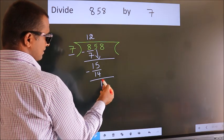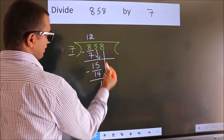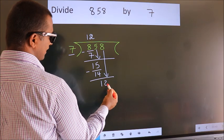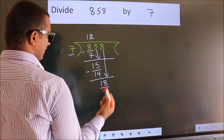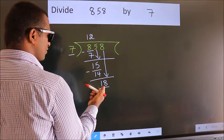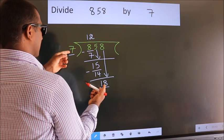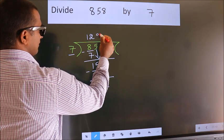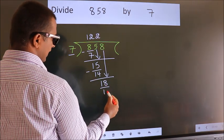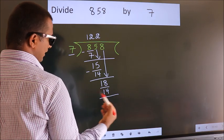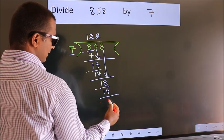After this, bring down the beside number. So 8 down. So 18. A number close to 18 in the 7 table is 7 twos 14. Now we subtract. We get 4.